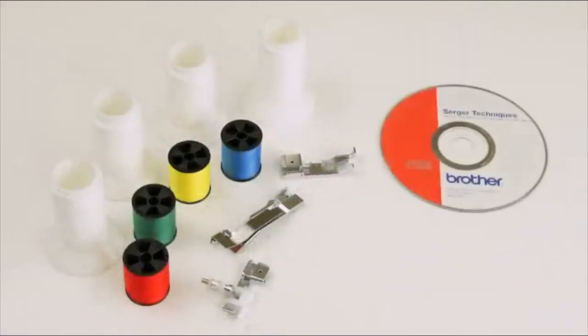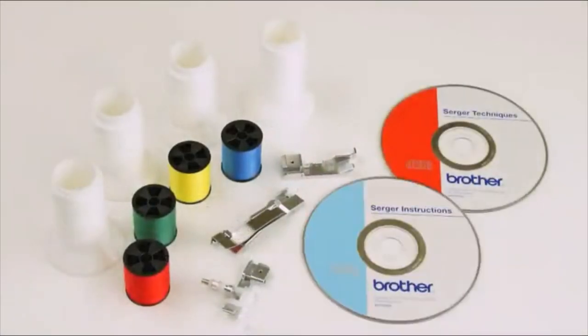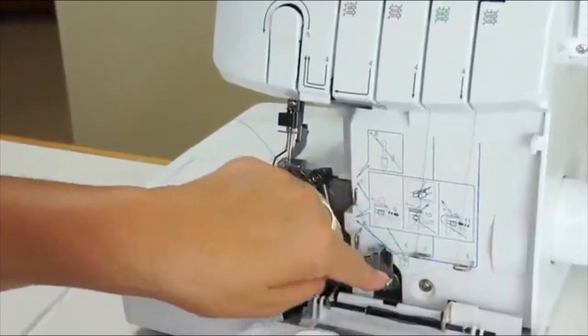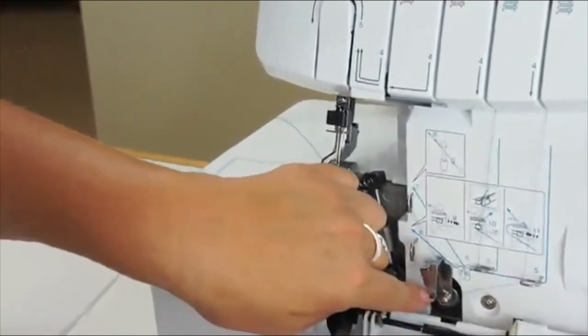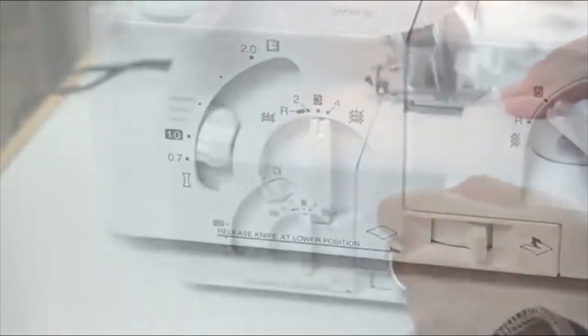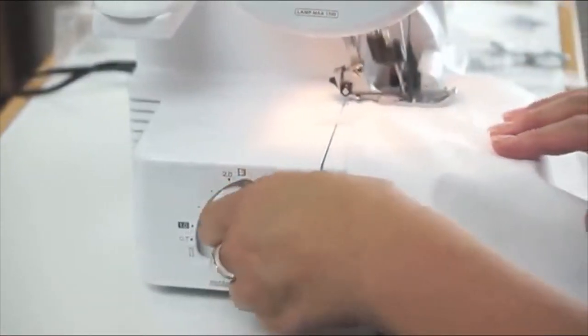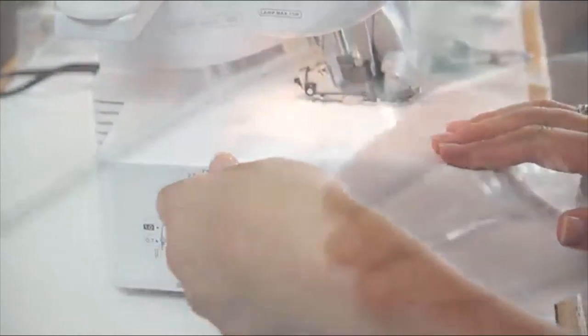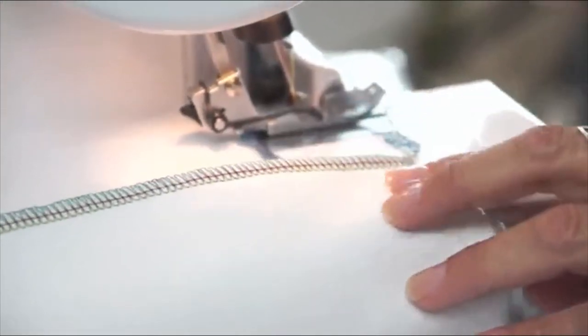It even includes an instructional DVD to get you serging in no time. Threading the machine is easy, just follow the numbers. You'll enjoy reliable, easy color-coded threading. The differential fabric feed offers a 0.7 to 2.0 ratio on many fabrics, even lightweight knits offering durable and consistent stitch quality virtually every time.